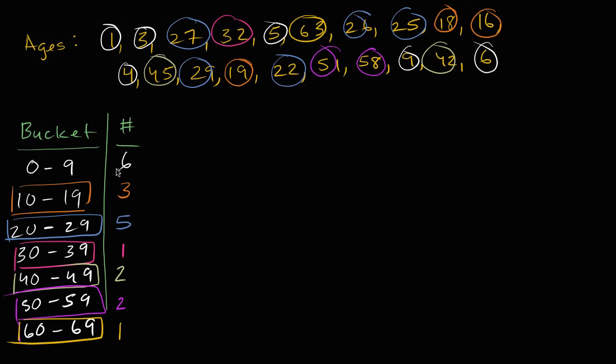So this is one way of thinking about how the ages are distributed. But let's actually make a visualization of this. And the visualization that we're going to create, this is called a histogram.